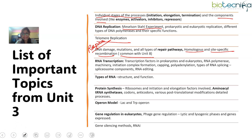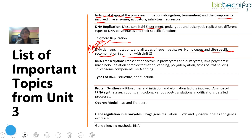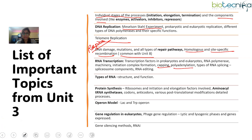Coming to DNA transcription: transcription factors in prokaryotes and eukaryotes — and the sequences they bind to — are definitely important. Also cover the RNA polymerase machinery, initiation complex formation, capping, polyadenylation, and post-transcriptional mechanisms. Post-transcriptional modifications in eukaryotic cells are very important. Questions do come from capping, polyadenylation, and splicing. Knowing what splicing is isn't enough — you also need to understand how a spliceosome works, its components, the different types of splicing, and RNA editing.